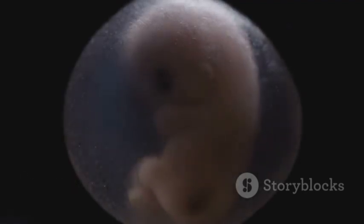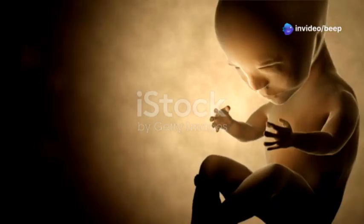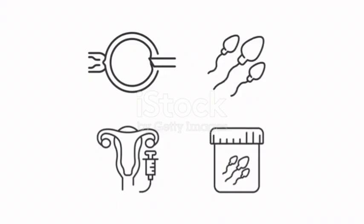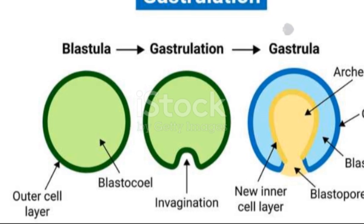The outer layer of the blastocyst, the trophoblast, will eventually form the placenta, while the inner cell mass is destined to become the embryo itself. Around day six or seven, the blastocyst attaches to the lining of the uterus, a process called implantation. The trophoblast cells burrow into the uterine wall, anchoring the blastocyst securely. This connection allows for the exchange of nutrients, oxygen, and waste products.